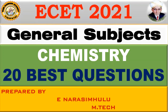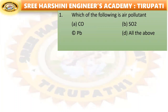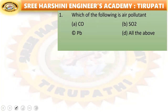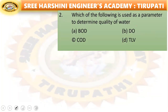See the first question: which of the following is an air pollutant? CO, SO2, Pb, or all of the above? CO is an air pollutant, SO2 is an air pollutant, and Pb is also an air pollutant. So option D — all of the above — is the right answer.